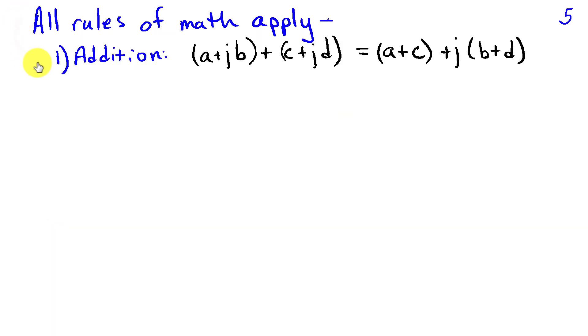These imaginary and complex numbers satisfy all the rules of mathematics. For example, we can add two complex numbers. So if I have a + jb, and I add c + jd, I end up adding a and c. Then the j, I can factor out of the b + d term. I end up with a complex number whose real part is the sum of the real parts of the individual numbers, and the imaginary part is the sum of the imaginary parts of the original numbers.